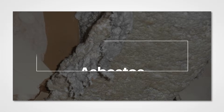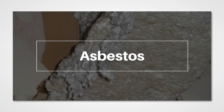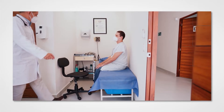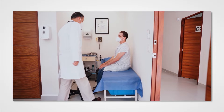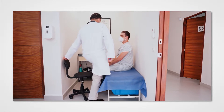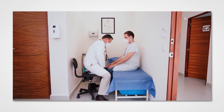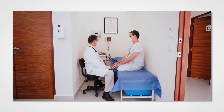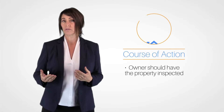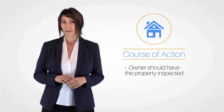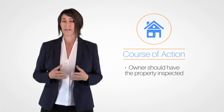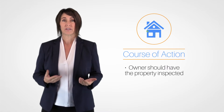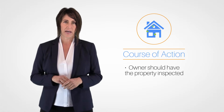At one time, asbestos was a popular substance used for insulation, but once it was linked to serious health issues, the federal government enacted strict rules in its use in insulation and other areas where people can come into contact with it. If you're working with a property that you think could contain asbestos, the best course of action is for the owner to have the property inspected. Exposure to asbestos can increase the risk of various health issues, such as lung disease and certain forms of cancer.